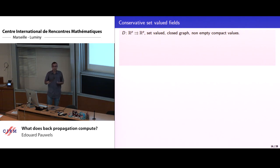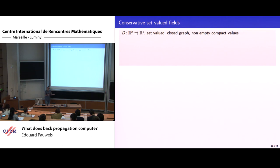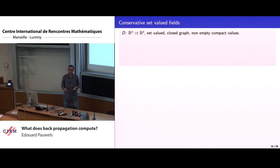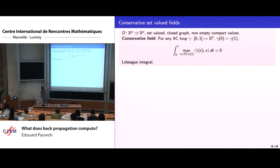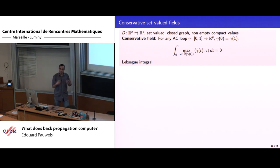So what is conservativity? D will be a set-valued field with closed graph, non-empty compact values. Conservativity is the property of having zero circulation, adapted to this setting. We use absolutely continuous loops as test functions — a loop is a path that is absolutely continuous with the same beginning and end. The circulation of D along a loop is an integral understood in the Lebesgue sense, taking the dot product of the velocity field with the generalized derivative v, choosing a value via max over all possible dot products.